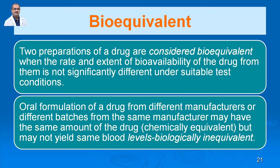They may be chemically equivalent but may not yield the same blood levels — biologically inequivalent. For example, in the market there are many preparations of aspirin from different companies. Sometimes the effect differs because it depends on the formulation. Tablets from Cipla, Intas, or Alembic may differ in the quantity present in the blood due to differences in manufacturer and batch — these drugs can be called drugs with different bioequivalency.